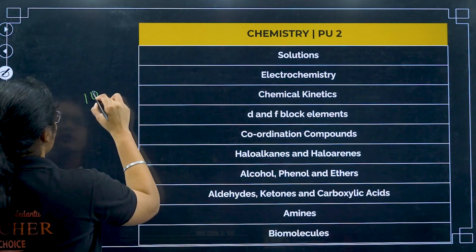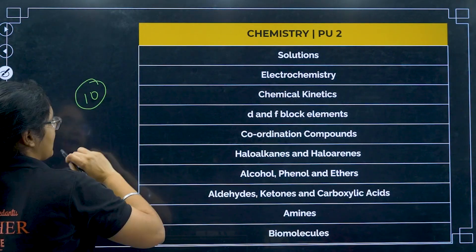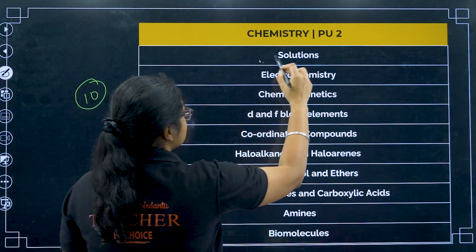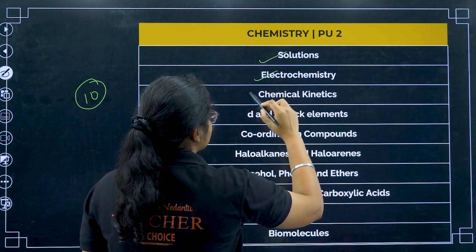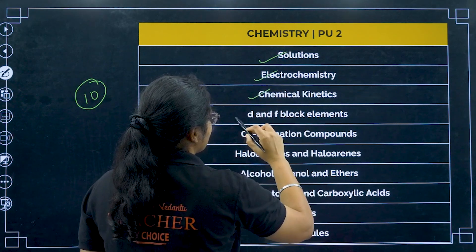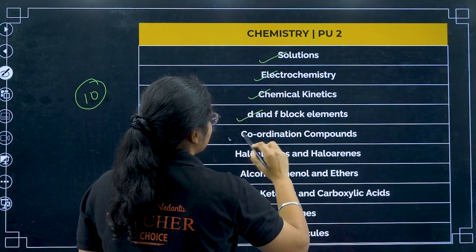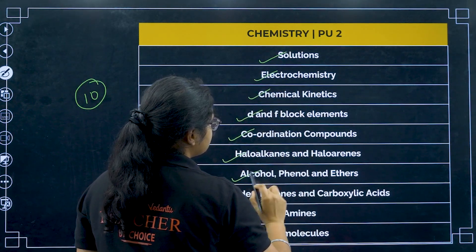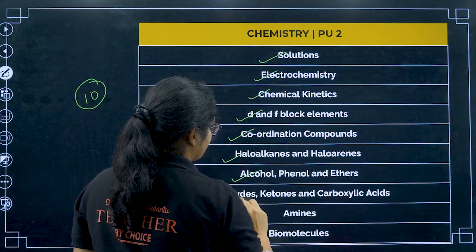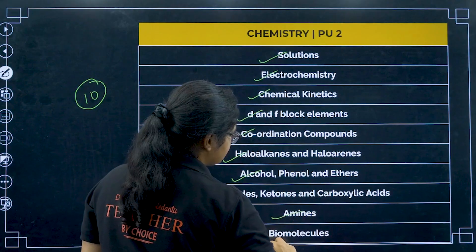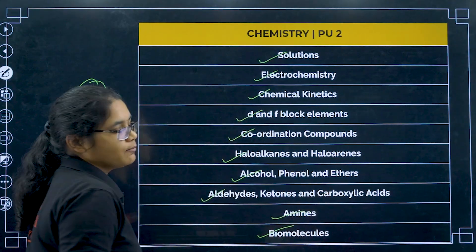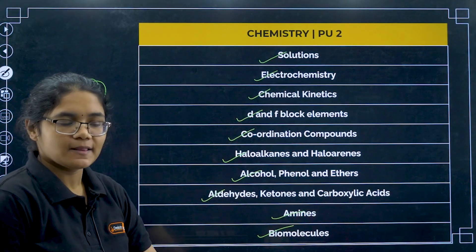Moving to PU2 chapters, here we have 10 chapters: solutions, electrochemistry, chemical kinetics, D and F block, coordination compounds, haloalkanes, alcohols, aldehydes, amines, and biomolecules.